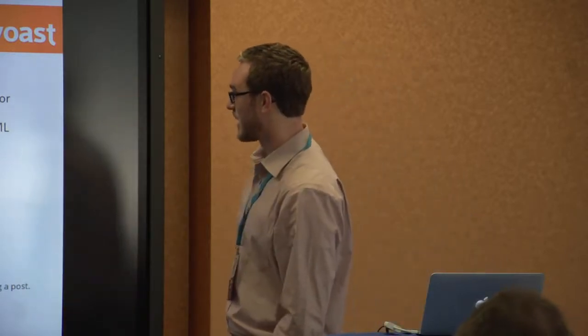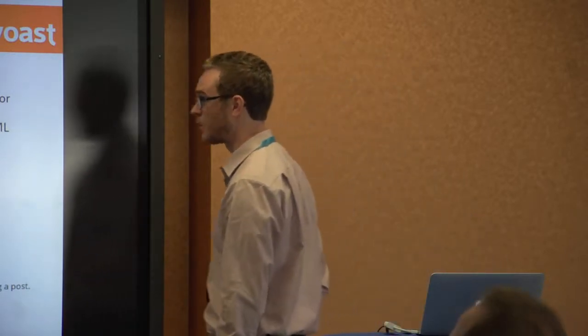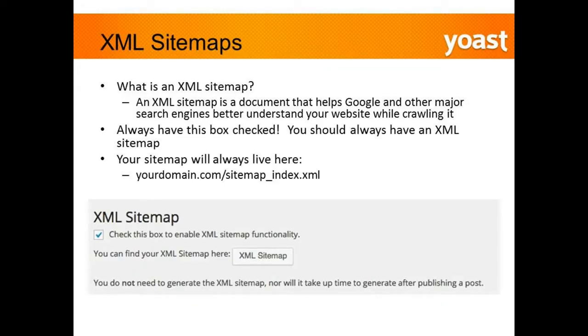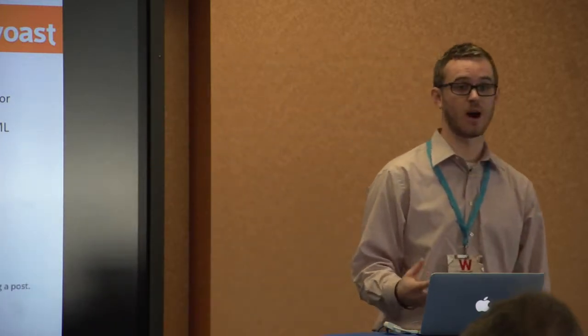Always have this box checked. Your sitemap is always going to live at your domain name forward slash sitemap_index.xml. As soon as you get this box checked, generate your XML sitemap and go back into Webmaster Tools for both Google and Bing and submit it. That way they have it in their records, and it will dynamically update as you add pages — you don't have to resubmit it every time you add new content.